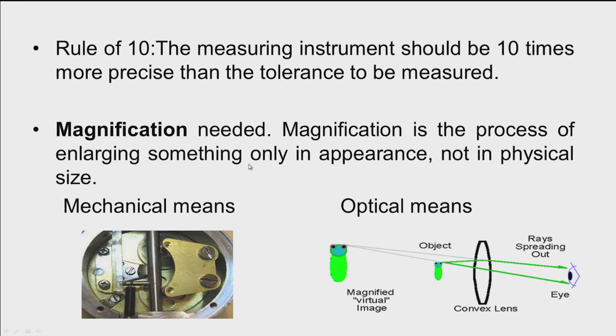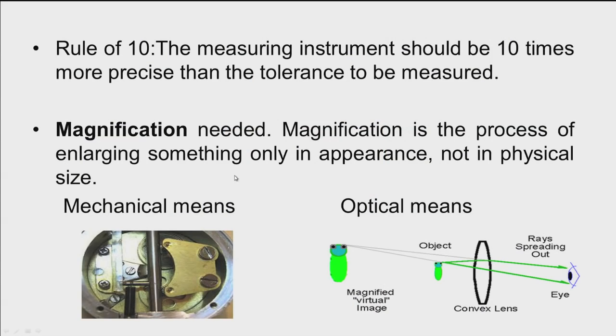Magnification is the process of enlarging something only in appearance, not in physical size. We need to understand whether any magnification is needed. If the measuring instrument is very simple like a steel rule, magnification may not be needed. But if we need to measure very minute dimensions like 0.01 or 0.02 millimeters, we need to magnify the physical quantity. We can magnify readings using mechanical means such as rack and pinion and gear trains, so the physical quantity is amplified and readings can be comfortably read.